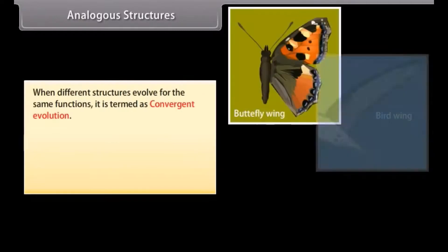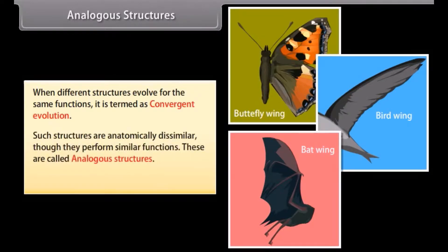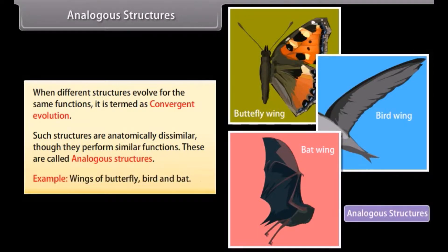Analogous structures. When different structures evolve for the same functions, it is termed as convergent evolution. Such structures are anatomically dissimilar though they perform similar functions. These are called analogous structures. Example: Wings of butterfly, bird and bat.